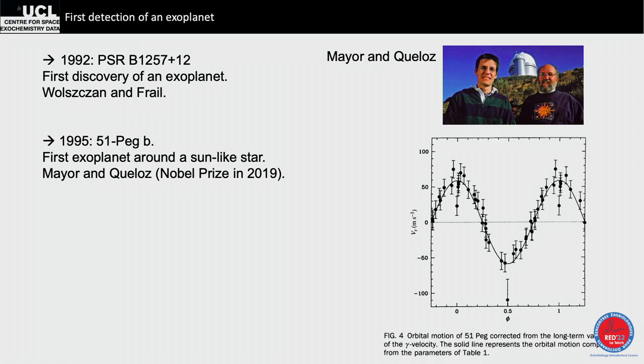For Mayor and Queloz, the technique they used was radial velocity. And in 2000, HD 209458 was discovered through another technique called transit. A transit is the variation of the luminosity of a star when a planet passes in front of it — absolutely correct.